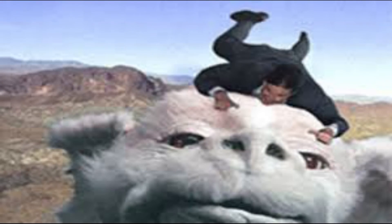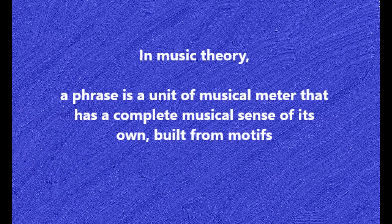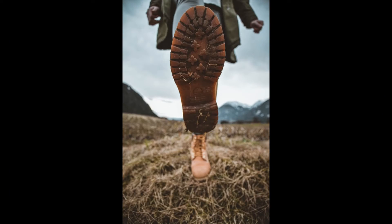Common meter is made up of two lines — one with four stresses and one with three. Long, then shorter. So any phrase with a longer first line and a shorter second line will work in the same way. It has forward momentum — kind of like when you put your foot where you expect a step to be and you stumble forward a little when it's not there. The main point is that the two phrases don't match up.